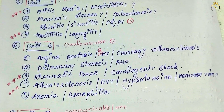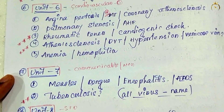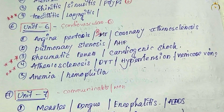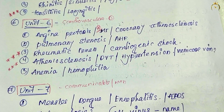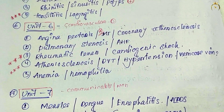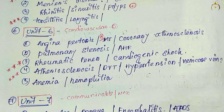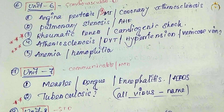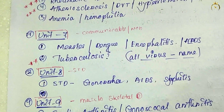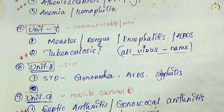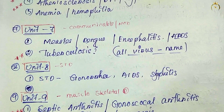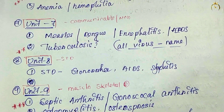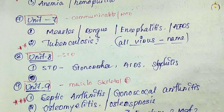Unit 6 is cardiovascular system — a very big and most important unit. One or two questions will definitely come. Angina pectoris, myocardial infarction — these are most important. Coronary atherosclerosis is also important. Rheumatic fever, atherosclerosis, hypertension, and anemia are also key topics to prepare.